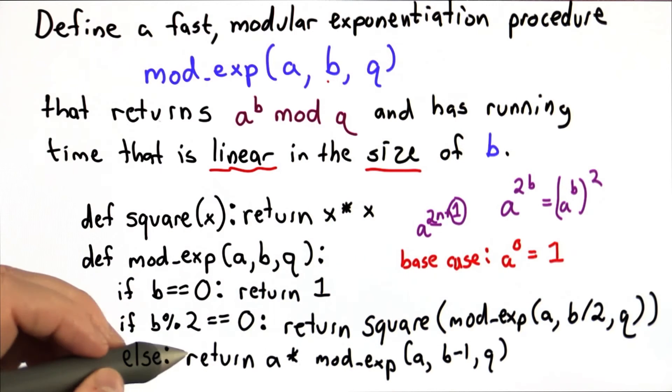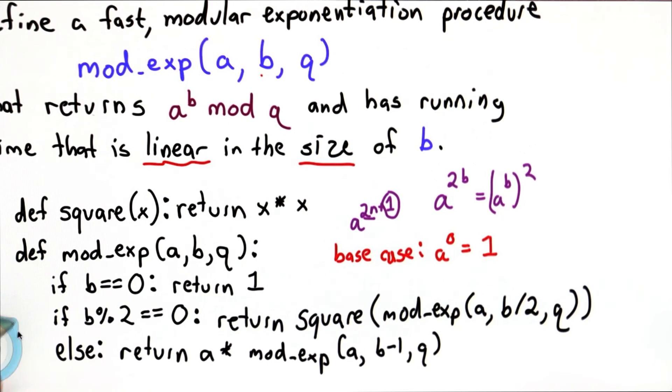Now this is just fast exponentiation. We haven't yet taken the modulos out. If we didn't care how big numbers got, we could do that all at the end. But we want to do that as we go.